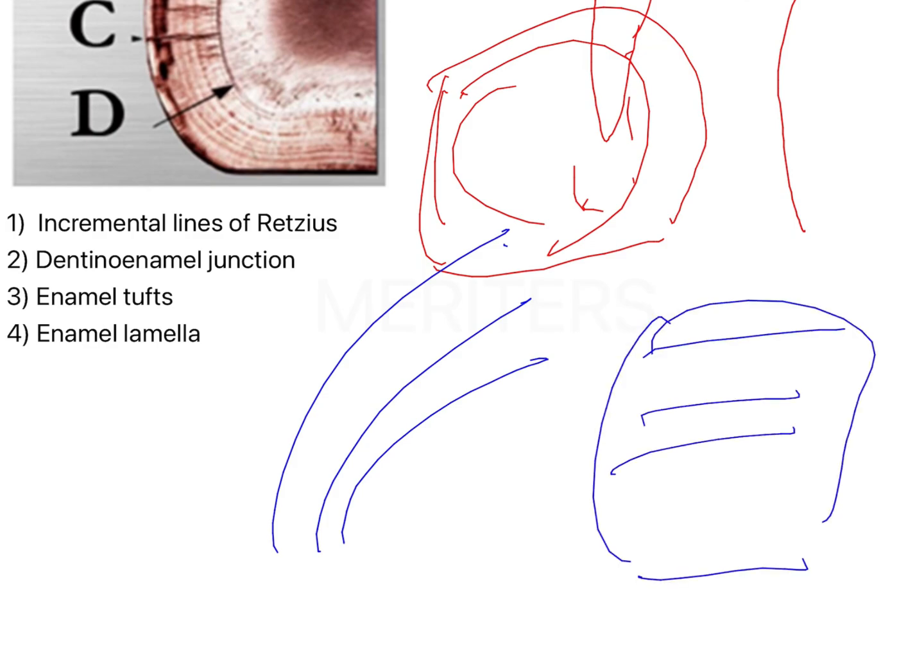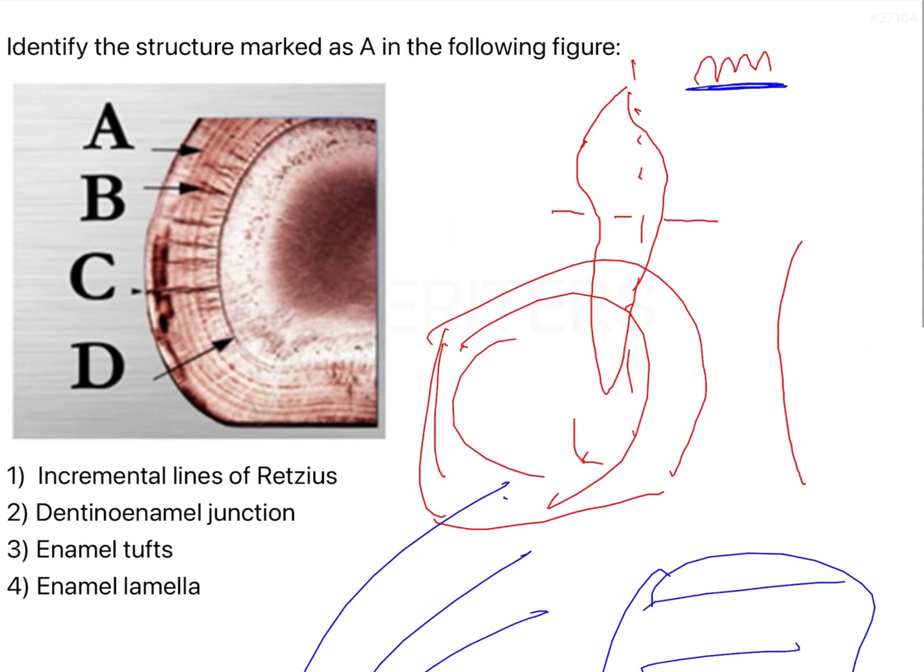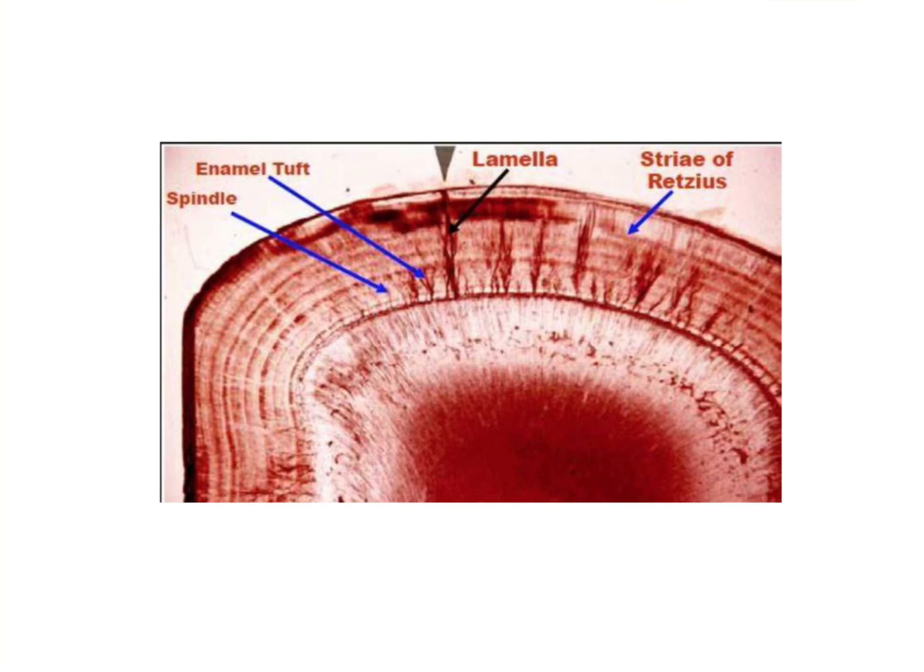These are important points and important MCQs they might ask you. In addition to that, when you look at a ground section under the microscope, you will see a few more structures. One of them is enamel spindle. What is this enamel spindle? You have the dentinoenamel junction, which is the place where the odontoblasts and the ameloblasts meet and start laying their respective tissues. At the DEJ, your odontoblasts secrete the dentin, and ultimately